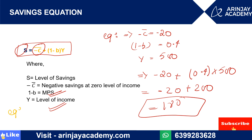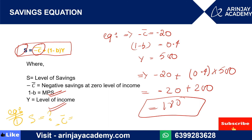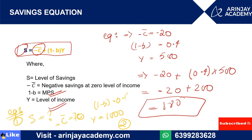Now I am giving you two questions as homework — please share your answers in the comment section. Question 1: Calculate savings S where negative c-bar is 70, (1 minus b) is 0.5, and Y is 1000. Question 2 involves calculating using MPS. Complete these two questions and share your answers in the comment section.